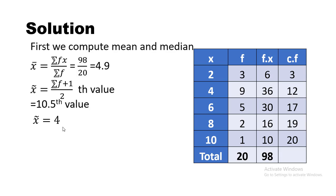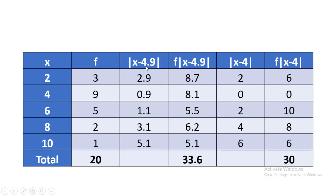The next step is to find |x − mean| and |x − median|. The mean is 4.9 and the median is 4. Taking absolute values of x − 4.9: |2 − 4.9| = 2.9, |4 − 4.9| = 0.9, |6 − 4.9| = 1.1, |8 − 4.9| = 3.1, |10 − 4.9| = 5.1. All negative values become positive due to the absolute value operator.